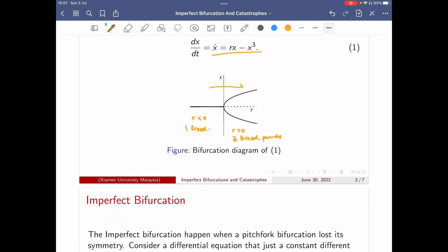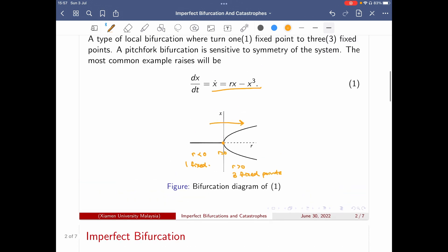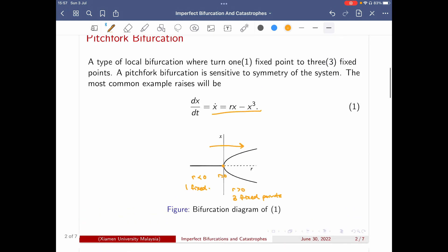So we call this to be a pitchfork and we say it's a perfect version, since everything just happened on one dot at r equal to zero, it doesn't just happen everywhere. Then how about an imperfect one?